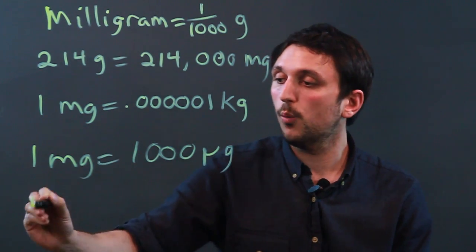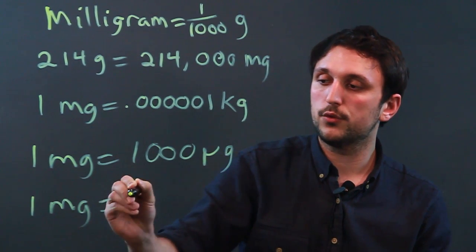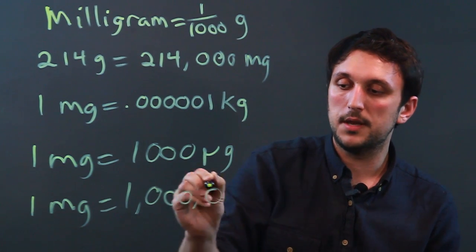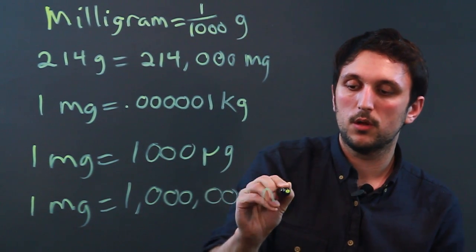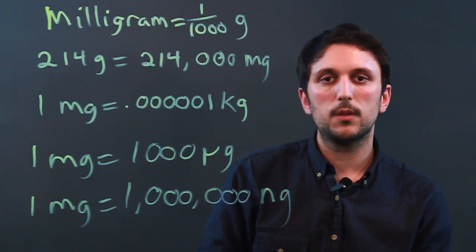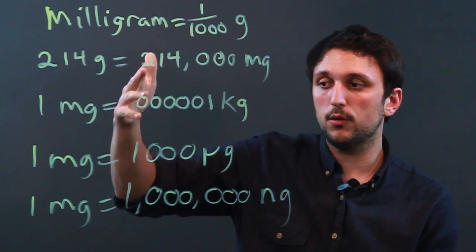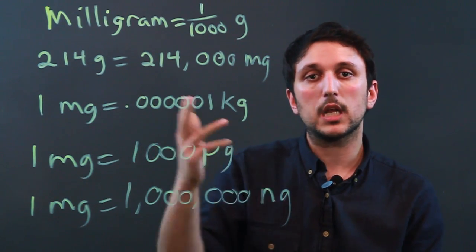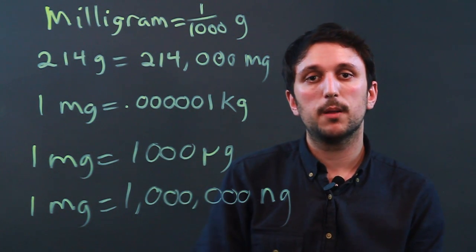One milligram is equal to one million nanograms or billionths of a gram. So there are other ones in the metric system, but these are the most commonly used and you've just learned how to convert each measure to milligrams. Thanks a lot.